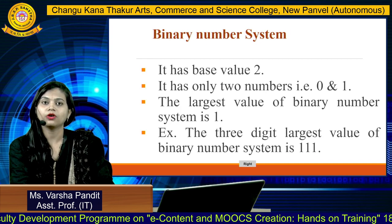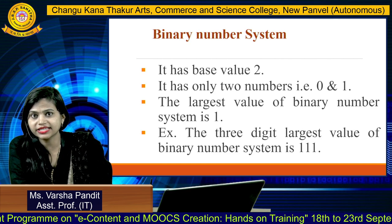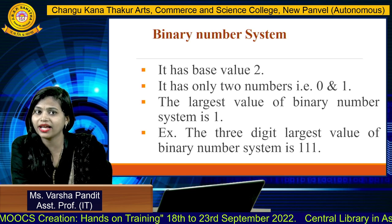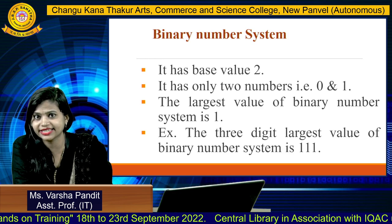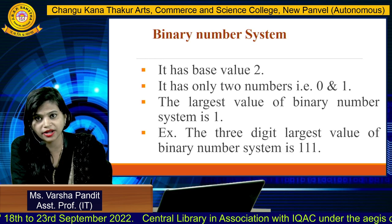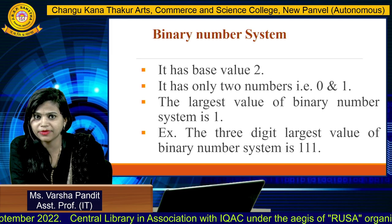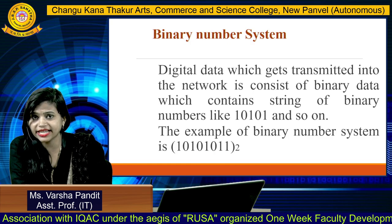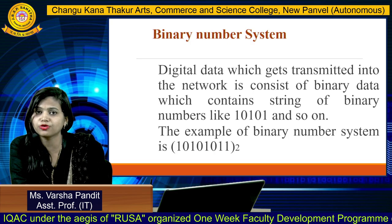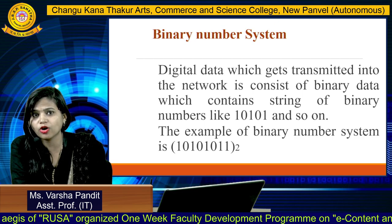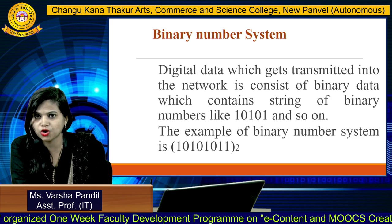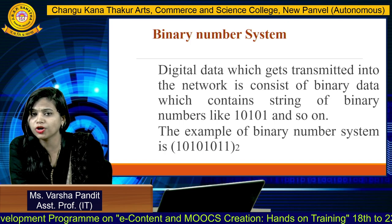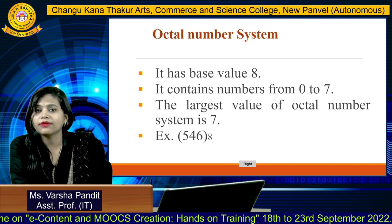We'll start with the binary number system. The binary number system has a base value of 2, and it has only two digits: 0 and 1. The largest value of the binary number system is 1 — for example, the three-digit largest value is 111. The data processed in computer systems, or digital data transmitted over a network, consists of binary data, which contains strings of binary numbers like 10101 and so on. We write a binary number as, for example, 10101101 followed by base 2 to define the base value.